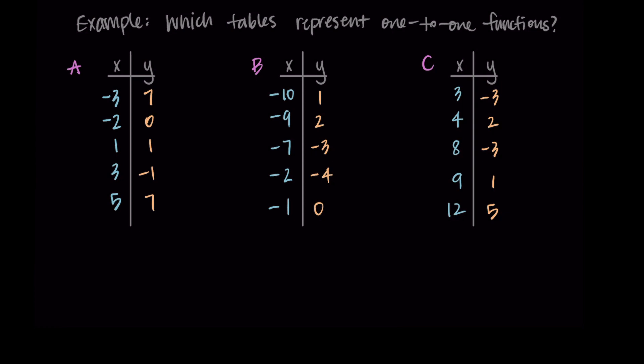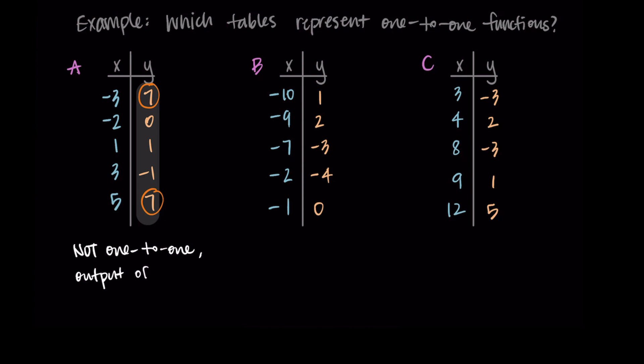Table A represents a function. Now I want to check for one-to-one, so I look at the outputs and want to make sure every output corresponds to only one input. But I'm seeing that seven shows up as an output twice — it corresponds to the inputs of negative three and five. So A is a function but it's not one-to-one, because the output of seven has two inputs that correspond to it.